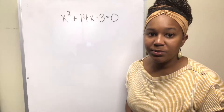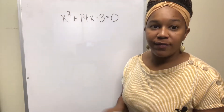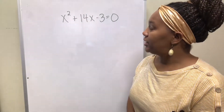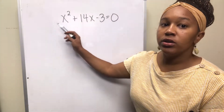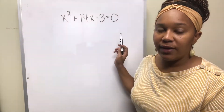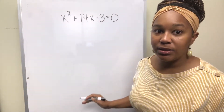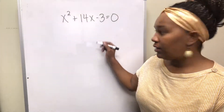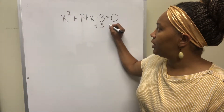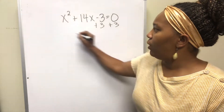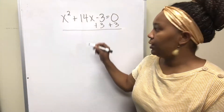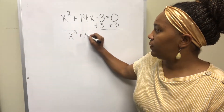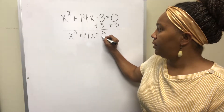Your first step should be to divide out a if a is not 1. In this example, a is actually 1, so you can skip step one. Step two is to isolate the constant term — you should have added three to both sides — giving you x squared plus 14x equals 3.